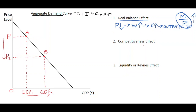Secondly, we have the competitiveness effect. The equation you need to know is the real exchange rate: the nominal exchange rate E multiplied by the price in the domestic country, all divided by the price in the foreign country. In our economy the price is dropping domestically, so what tends to happen is that the real exchange rate drops as well — if the numerator drops, the overall real exchange rate drops.